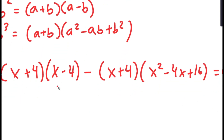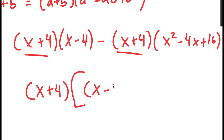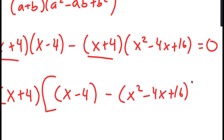Now, because both of these terms have x plus 4 in them, I can factor out x plus 4. So I get x plus 4 times x minus 4 minus x squared minus 4x plus 16 is equal to 0.